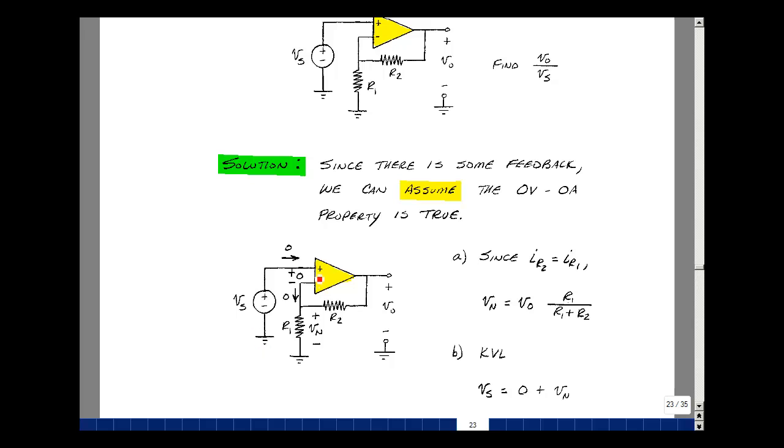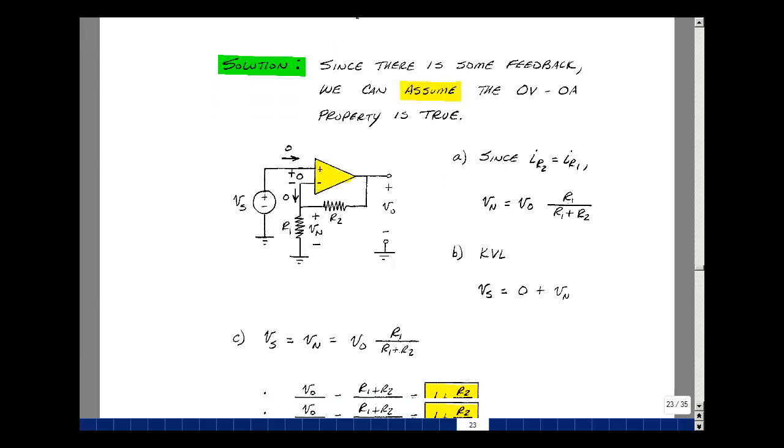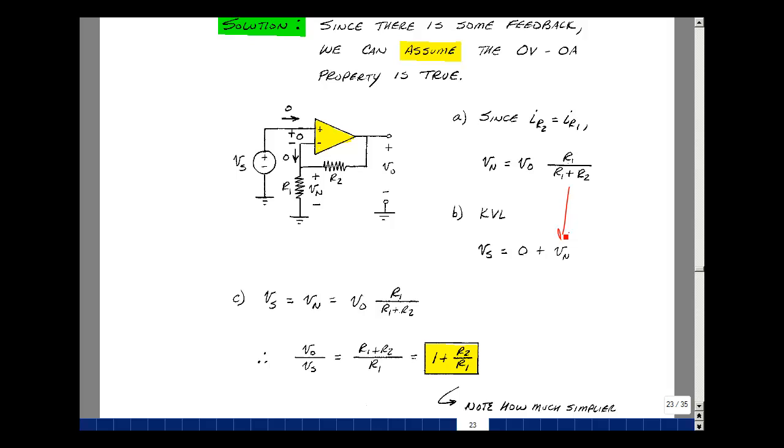So the voltage across R1 is just simply Vout times R1 over R1 plus R2. Now, if you go around the loop this way, the rise in voltage would equal the drops. So Vs equals zero plus Vn. Now I can substitute that in, and so Vs equals Vout times R1 over R1 plus R2.